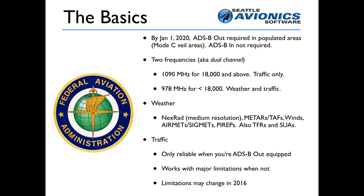The weather information you get from ADS-B — the best way to put it is, you get what you need. You get medium resolution Nexrad radar, METARs and TAFs, winds aloft, airmets and sigmets, and PIREPs. You also get things that aren't strictly weather, such as TFRs and SUAs.